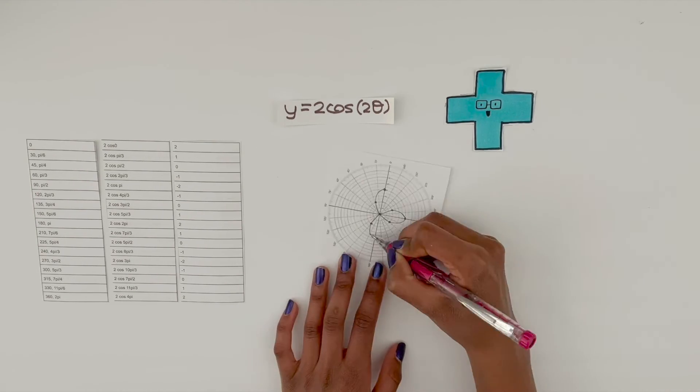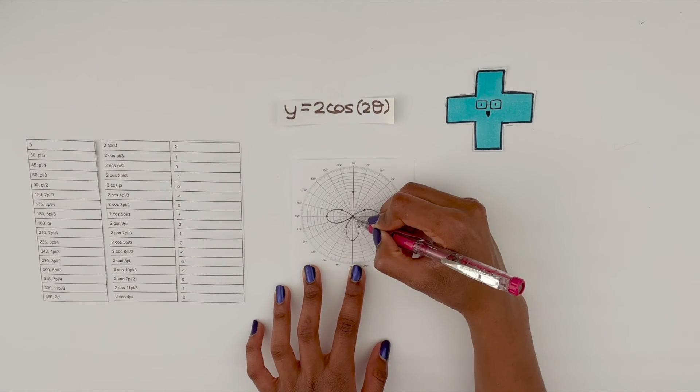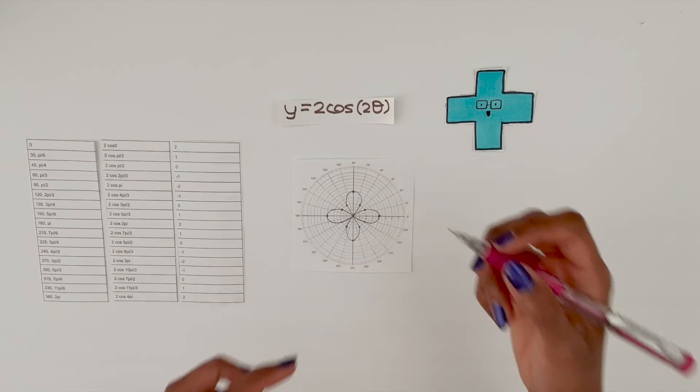Also keep in mind that my scale goes by 0.5 instead of 1 to ensure that you guys could see my graph clearly.